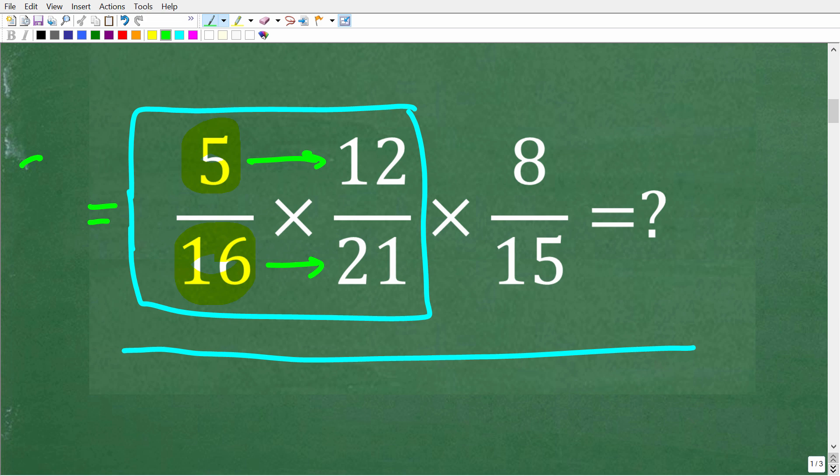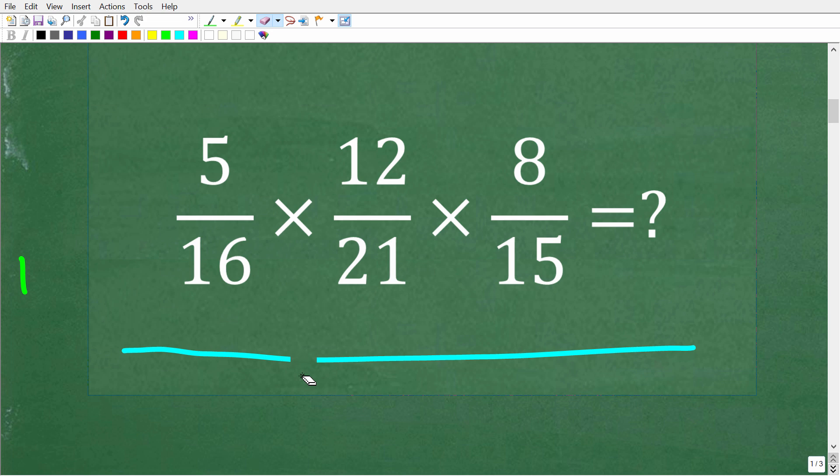So the answer here would be 5 times 12 over 16 times 21. Now you have to do all this multiplication, and of course we're not using a calculator, but this is the correct procedure to multiply two fractions or two or more fractions. So here we have three fractions, so to get the right answer we have to multiply all the numerators and write that over the product of all the denominators.